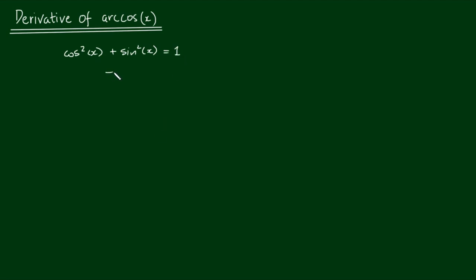This implies, if I rearrange this relationship, I get sin²(x) = 1 - cos²(x). And if I take the positive square root of both sides,